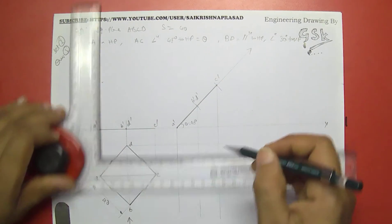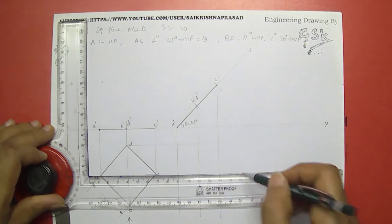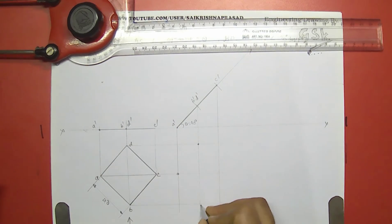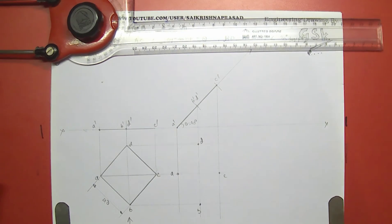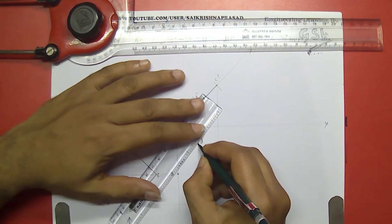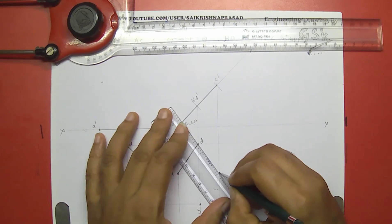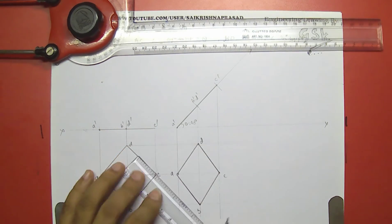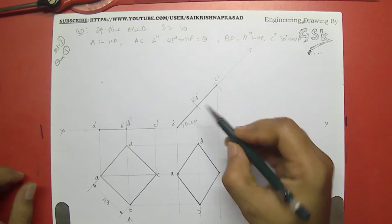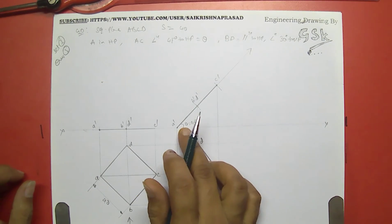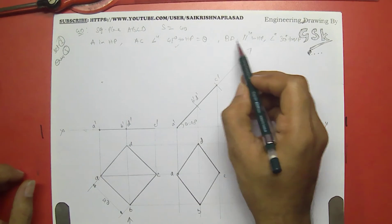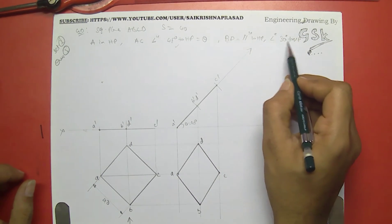Project this side. So this is A, B, C and D. Our diagonal AC is inclined at 45 degrees to the HP — we have finished this step. Next we are going to make BD parallel to HP and inclined 30 degrees to the VP.